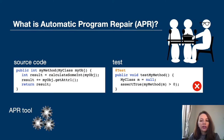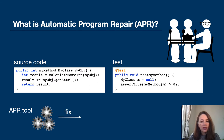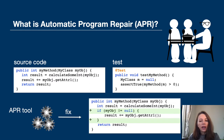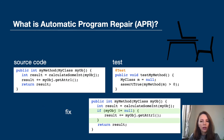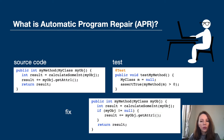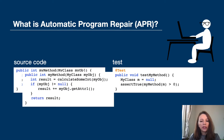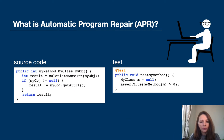The test failure triggers an APR tool that generates a fix, and the fix is a null pointer checker, and it passes the test. Once you're back from your lunch break you have a fix waiting for you to accept it and apply it to your code.